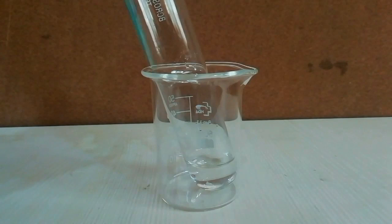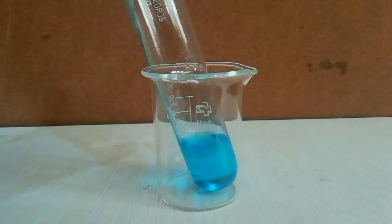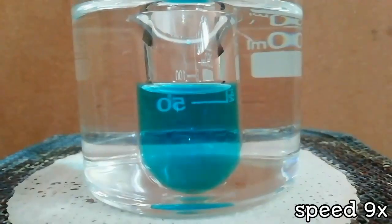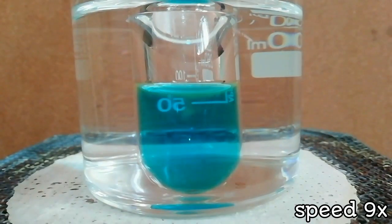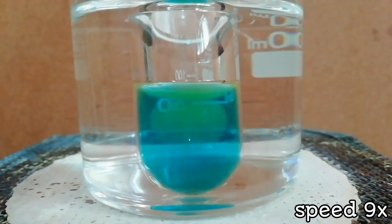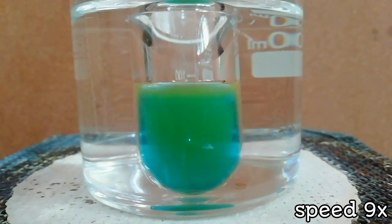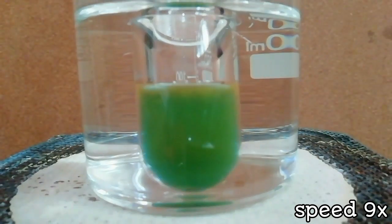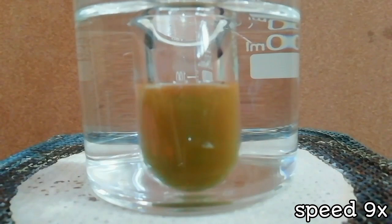Add equal volumes of reagent to the test sample and heat it by hot water bath. If the compound contains glucose, it will change to color blue, green, yellow, orange, and finally to brick red precipitate.